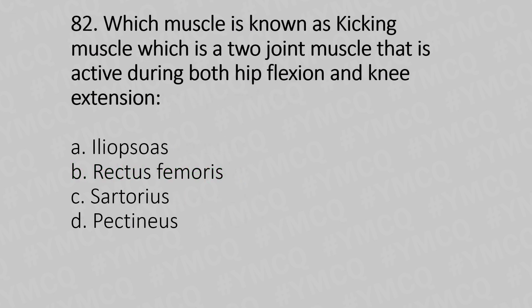Which muscle is known as the kicking muscle — a two-joint muscle active during both hip flexion and knee extension? Option A: iliopsoas; option B: rectus femoris; option C: sartorius; option D: pectineus. The answer is option B: rectus femoris.